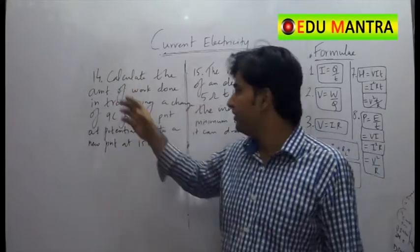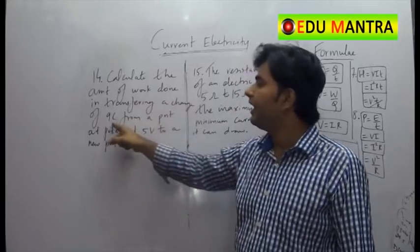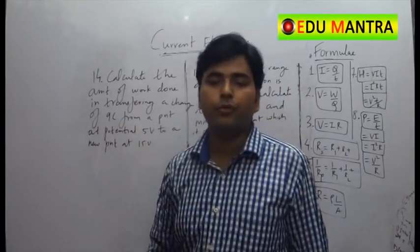The last two final questions here. Calculate the amount of work done in transferring a charge of 9 coulombs from a point at potential 5 volt to a point at potential 15 volt.